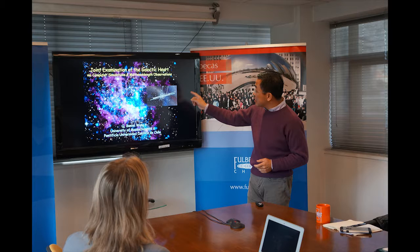This galaxy is like a plate with a lot of smog, dust, molecules, and atoms — just a lot of things around. So visibly, you cannot see the center of our galaxy at all. You have to rely on radiation in the x-ray, infrared, millimeter, and radio. That's called multi-wavelength observations.